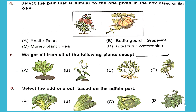Question 4: Select the pair similar to the given pair in the box. The box has rose (a shrub) and pumpkin (a creeper). We need to find a similar pair of shrub and creeper. The right answer is option D — hibiscus and watermelon. Hibiscus is a shrub and watermelon is a creeper.